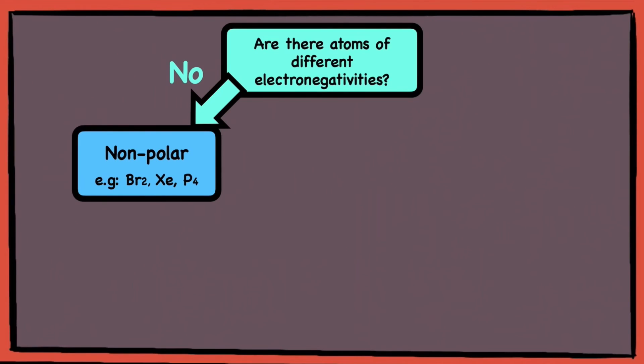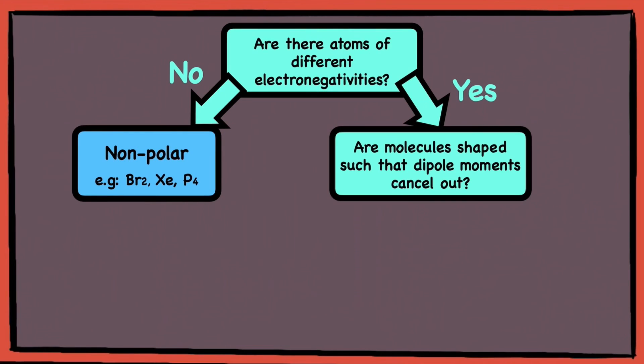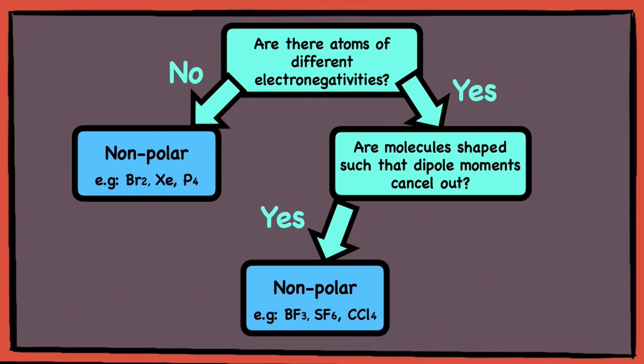To sum up, if there are no atoms of different electronegativities, the molecule is non-polar. If there are atoms of different electronegativities, the next question to ask is whether the molecules are shaped such that the dipole moments cancel out. If the dipole moments do cancel out, the molecule is non-polar, and if not, the molecule is polar.